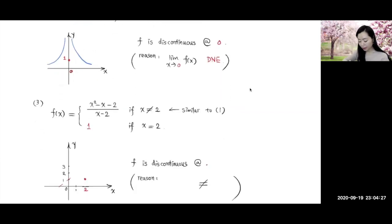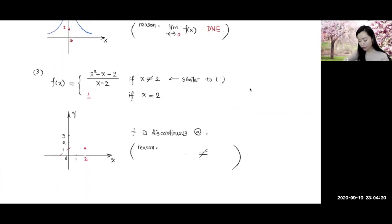Number 3. In this example, we have a piecewise defined function. This first part here is for x does not equal 2. So we already did that in example 1. We know the graph of that is going to be a straight line. However, with a gap over here.